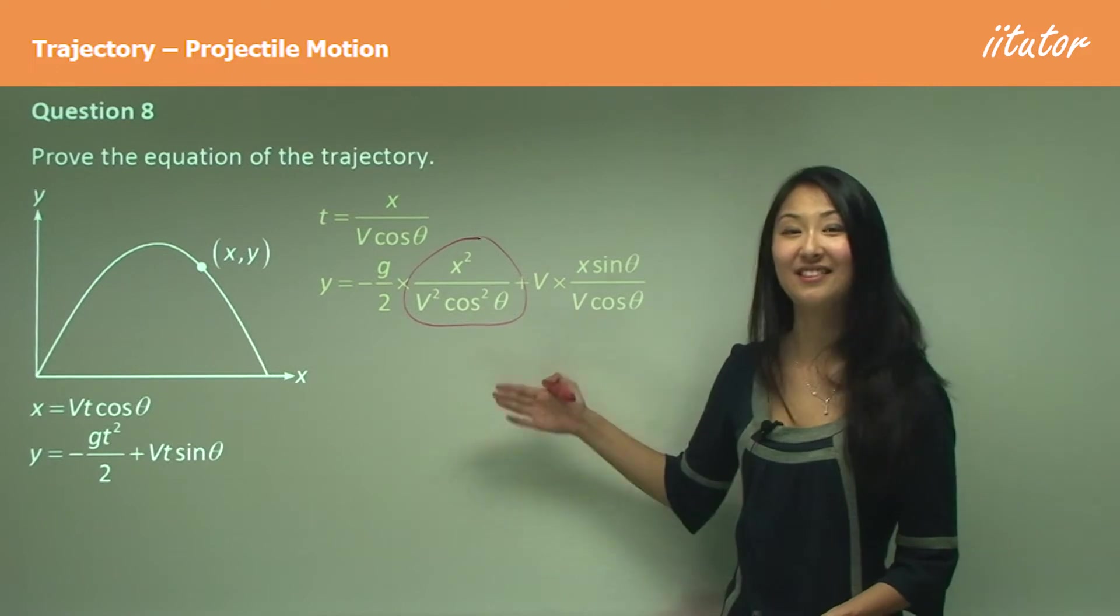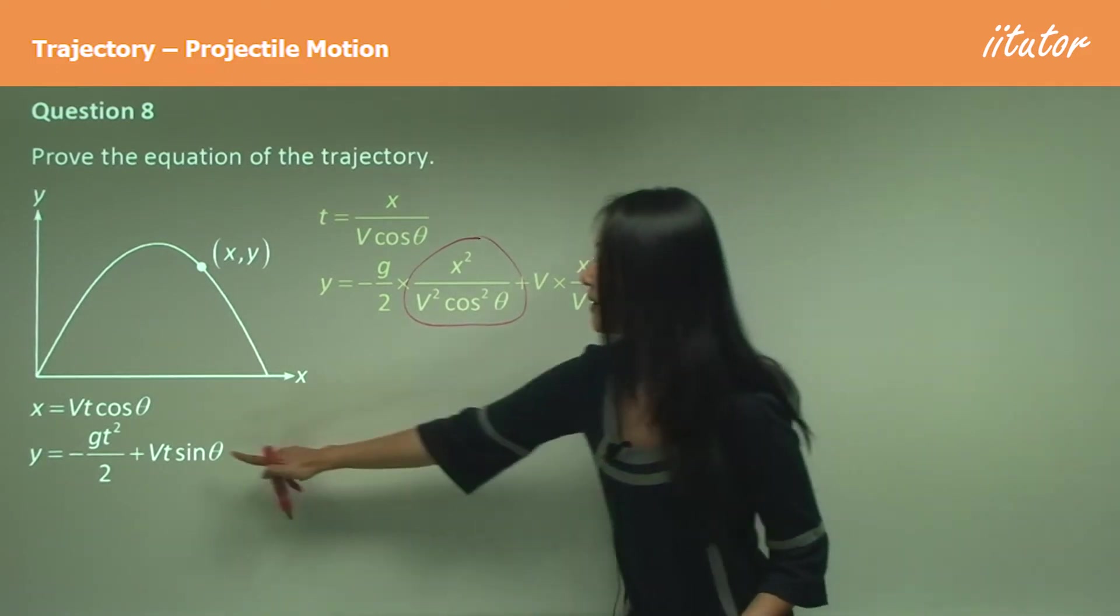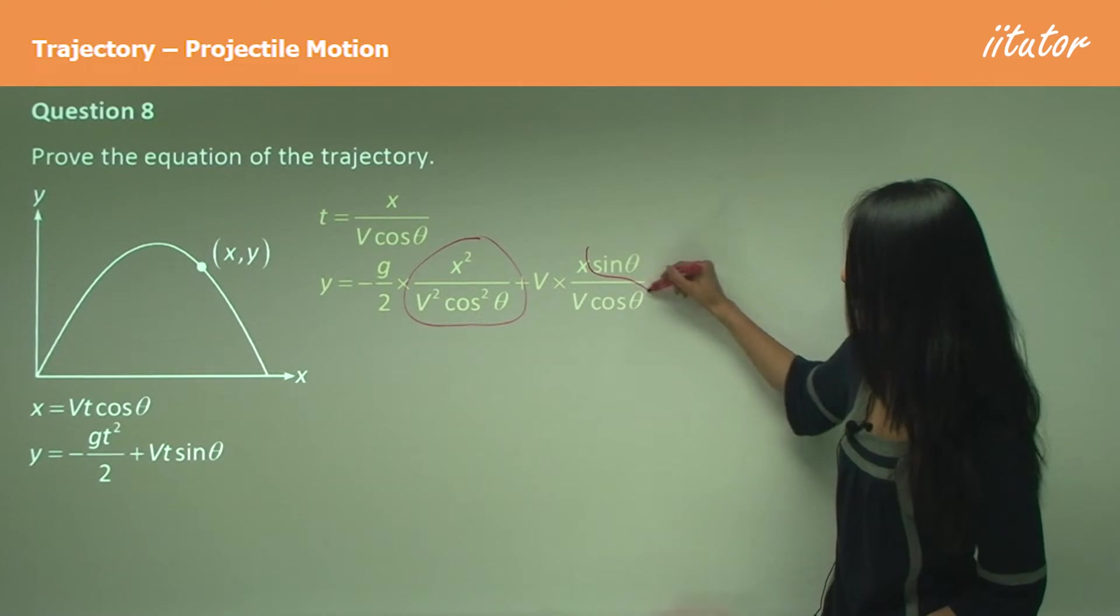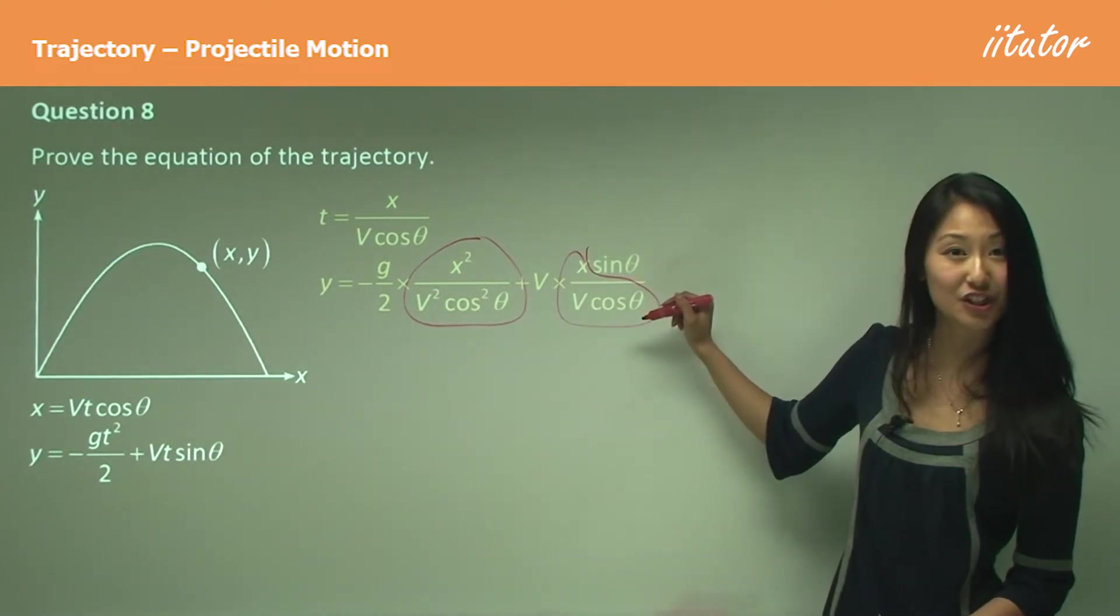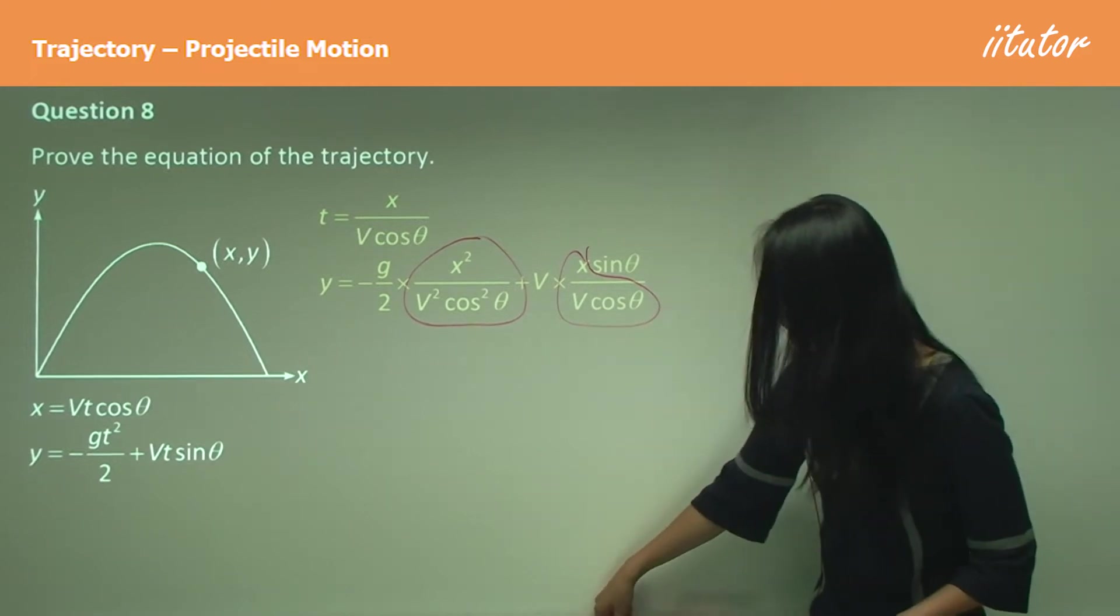So can you see how we've just substituted those in, and now we just need to simplify. In this case, v and v cancel, sin θ over cos θ, that should just give you tan θ.